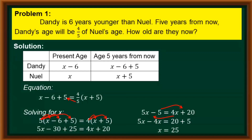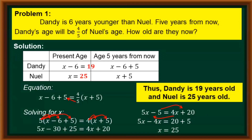Going back to our table, we know that the variable x represents Noel's age. Therefore, Noel is 25 years old. Since Dandy's age is x minus 6, we simply subtract 6 from 25, so Dandy is 19 years old. Thus, Dandy is 19 years old and Noel is 25 years old.